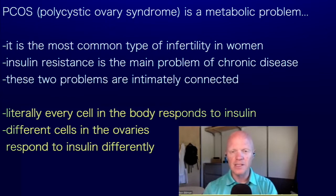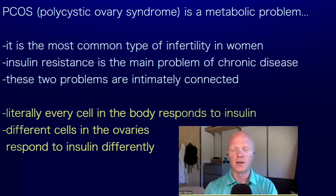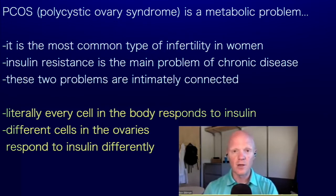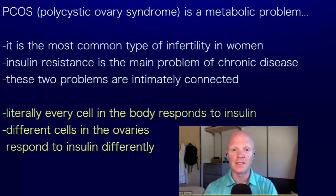Literally every single cell of the body responds to insulin in some way, and the ovaries are no different. And just as there are so many different types of cells, it's no surprise that insulin does different things at different cells. What it does at the ovaries is totally different than what it does to others, even within specific cells of the ovaries, like the theca cells, which will be a cell of focus for us today.